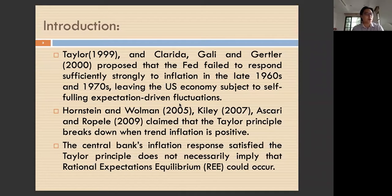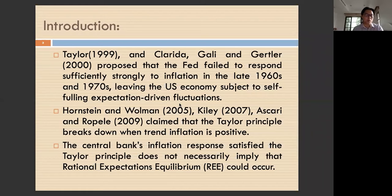The Fed failed to respond — in their work, the feedback on inflation was lower than one. So the Taylor rule failed and the US economy was unstable. But their analysis was based on models built with zero inflation at the steady state. In fact, the average inflation at that time was about 4%.